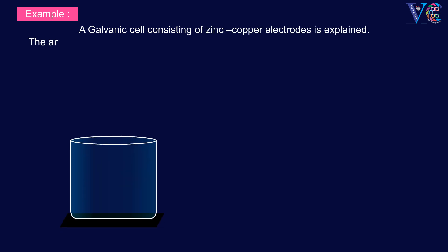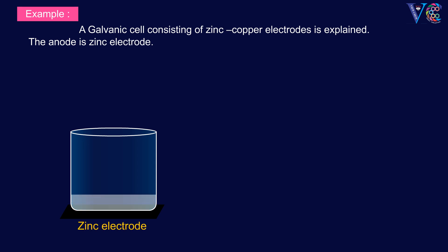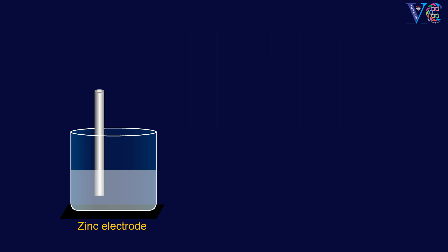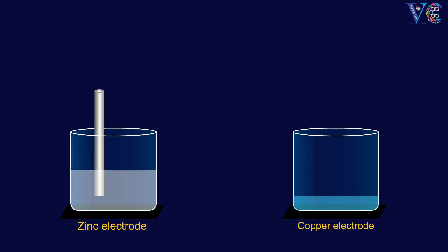As an example, a galvanic cell consisting of zinc-copper electrodes is explained. The anode is zinc electrode. It comprises of zinc rod dipped in 1M zinc sulfate solution. The cathode is copper electrode. It consists of copper rod dipped in 1M copper sulfate solution.